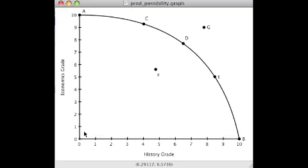If, on the other hand, you devoted all of your time to studying history, you could get a grade of 10 in history, and that's what this point B down here means. So the two extremes are spending all of your time on history or up here at point A, spending all of your time on economics, and in each case, getting the maximum grade.